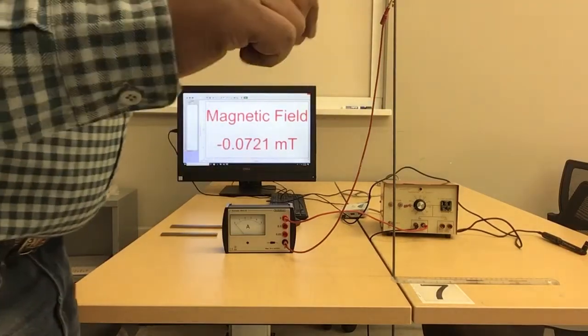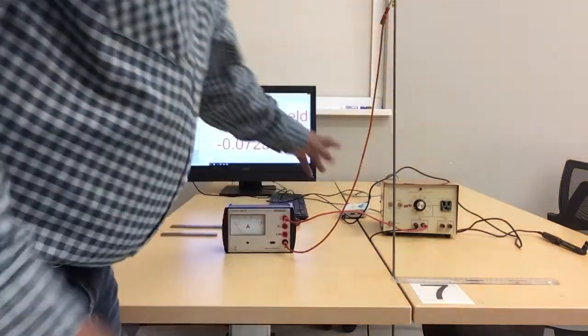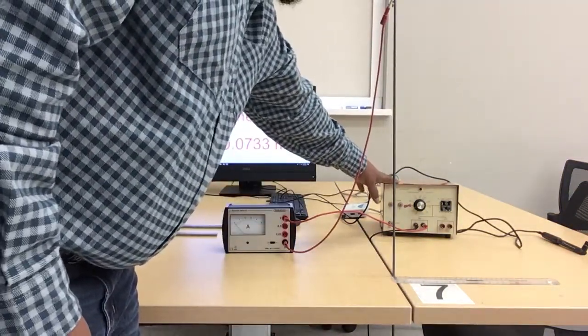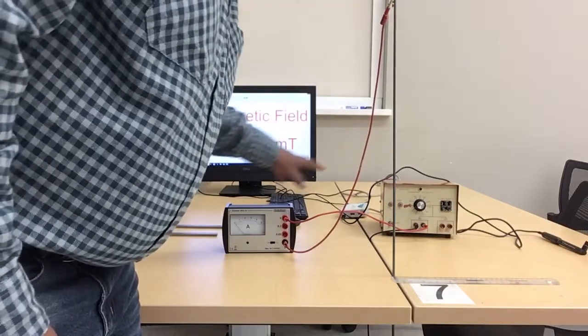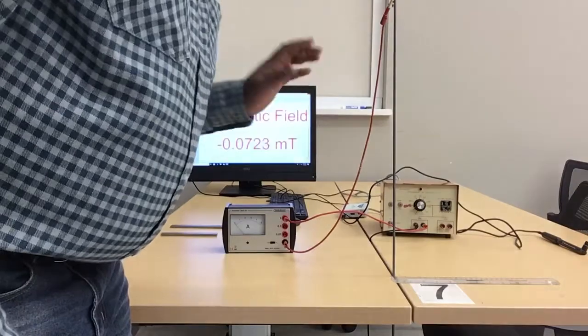We will take a measurement for the lab that you need to write a report for. So we have here a DC power supply and I have set the current coming from this source to 5 amps.